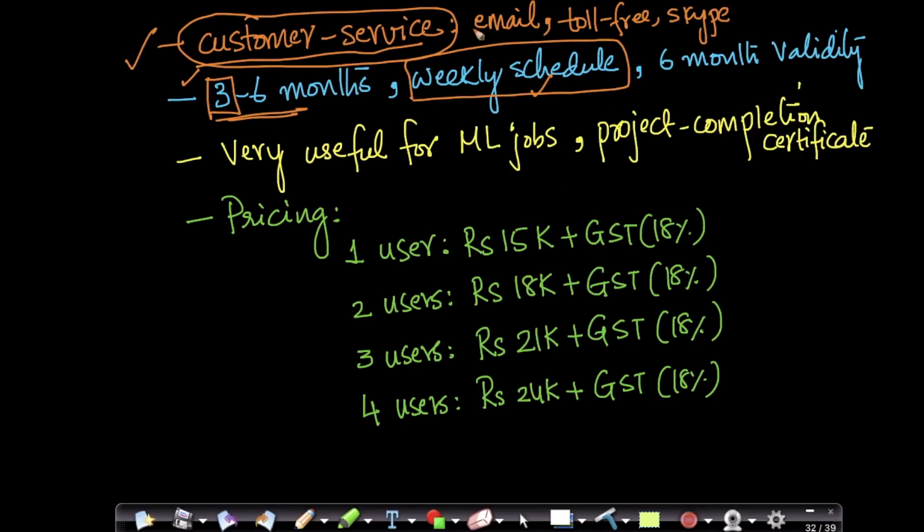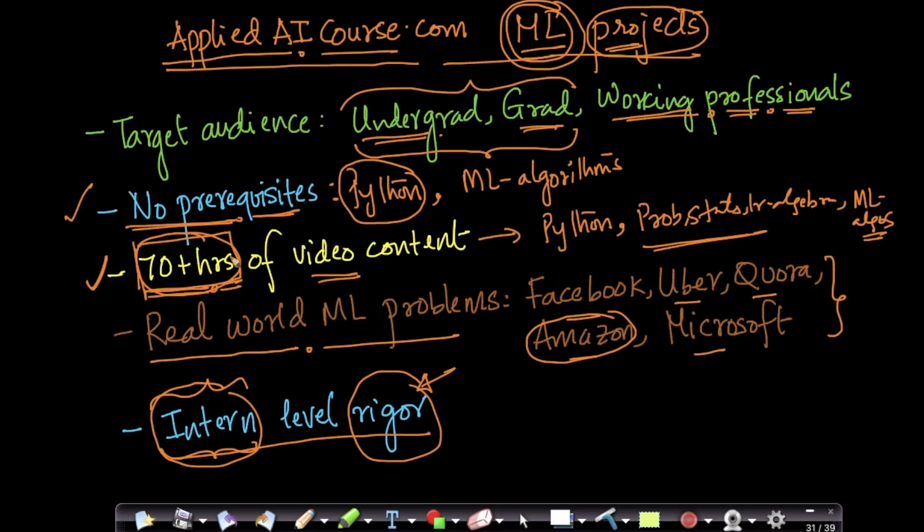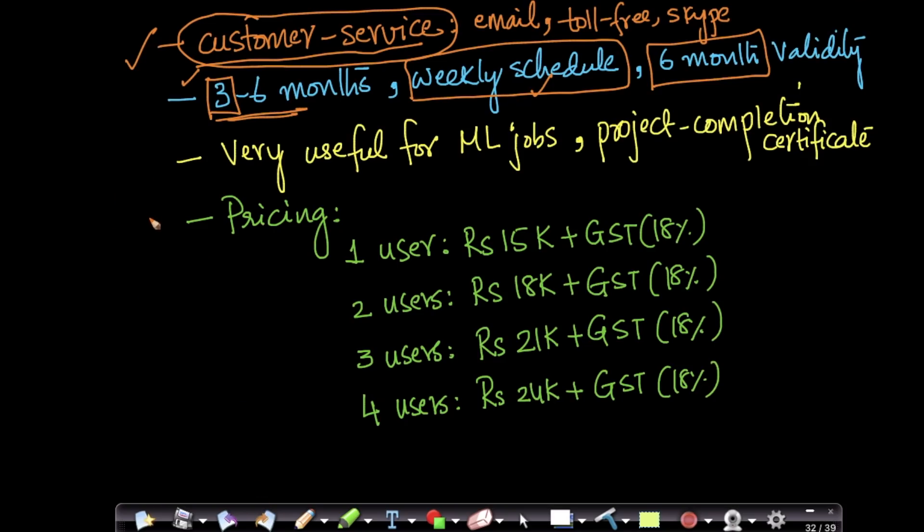And the whole course, this whole machine learning project course is valid for six months. So within six months, you will be comfortably able to learn all the concepts and solve a real world machine learning project. The most important part, especially for freshers, also for people who will be in the final year of B-Tech or M-Tech, is we provide a project completion certificate at the end of the project.